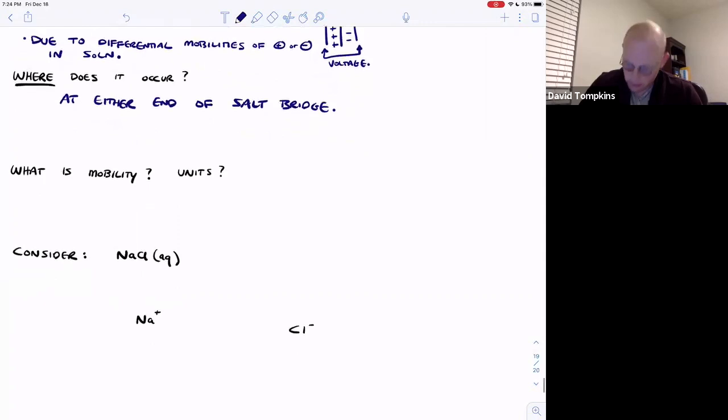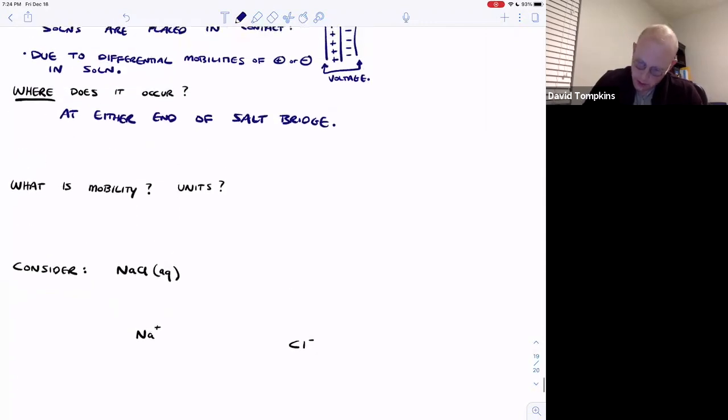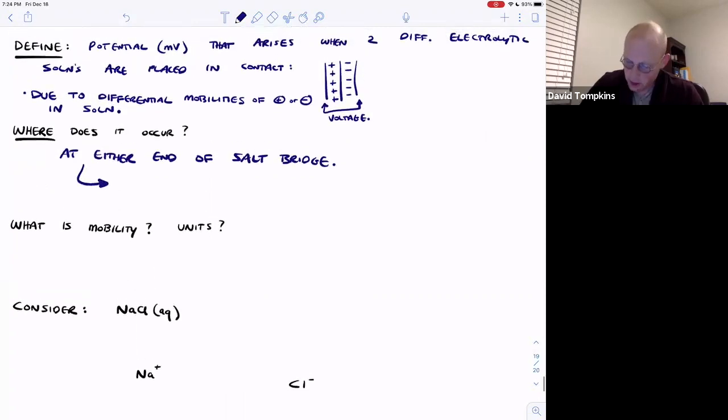So the problem here is that when this voltage exists, this is going to cause the reading of E cell, what your potentiometer tells you, to differ from reality, or it will cause inaccuracies in the voltage measurement and then you get inaccurate concentrations and chemical information.